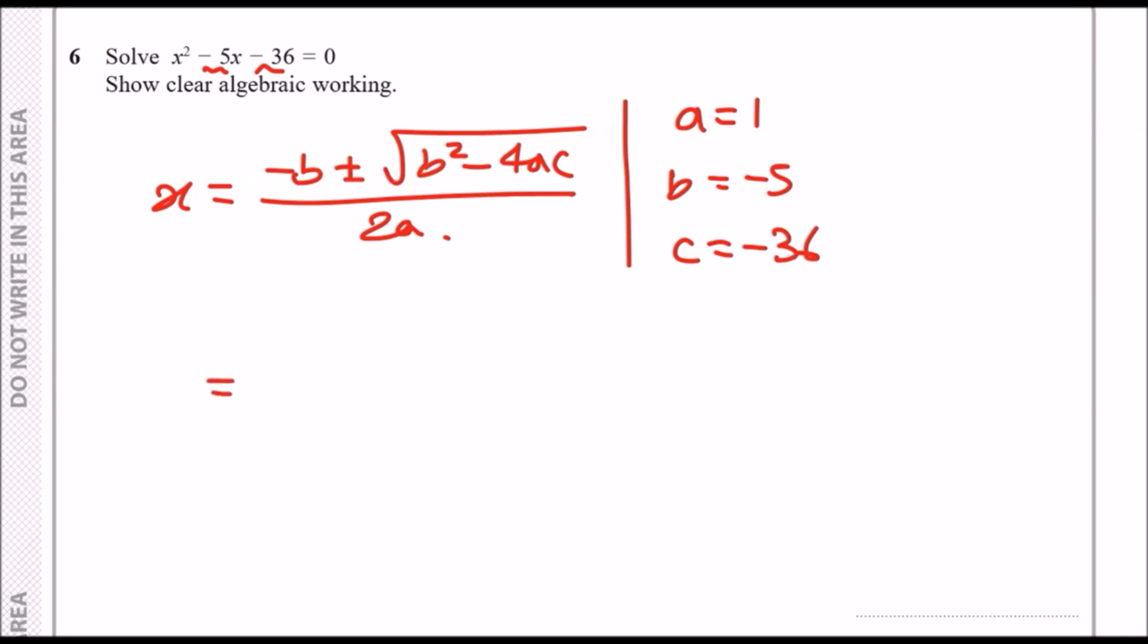All you have to do is literally plug these values into the formula. You're going to get minus b which ends up becoming plus 5, plus minus the square root of b squared which is minus 5 squared which is 25, minus 4 times a which is 1 times minus 36. All of this is over 2 times 1.